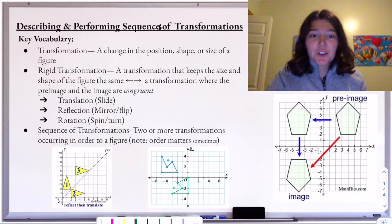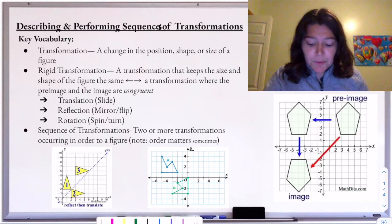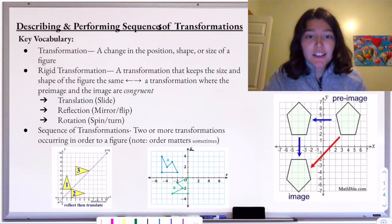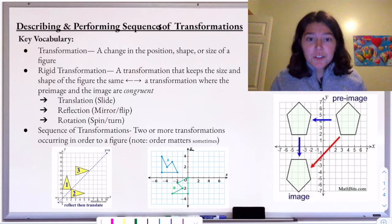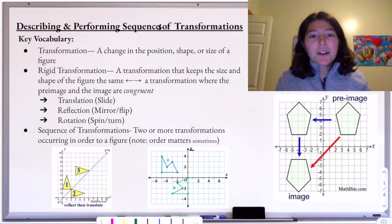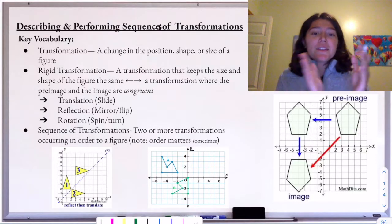We've learned those three, but we've learned them all separately. Today what we're doing is just putting them together. Sequences of transformations are when we have two or more transformations occurring in order to some figure. Note that when we have the word sequence, that implies that there's an order to it, and order does matter. There are some combinations of transformations where the order won't actually matter, but as a general matter, the order matters. It would be like: first this happens, then this happens.